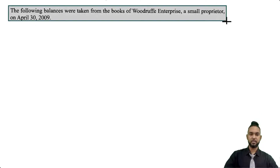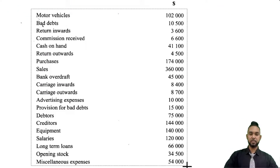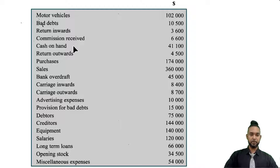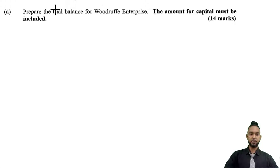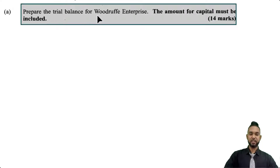They tell us that the following balances were taken from the books of Woodruff Enterprise, a small proprietor, on April 30th, 2009. They give us a long list of balances. The first thing they want us to do is to prepare the trial balance for Woodruff Enterprise, and the amount for capital must be included — 40 marks.